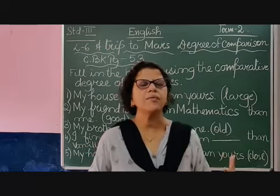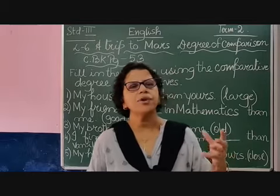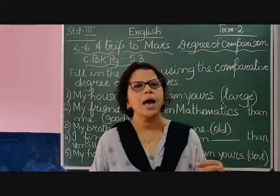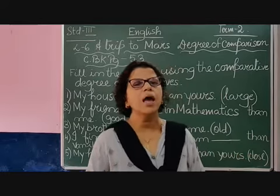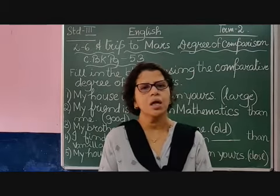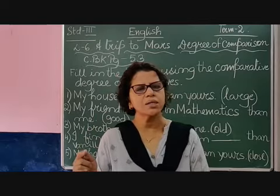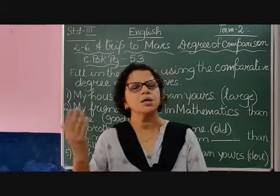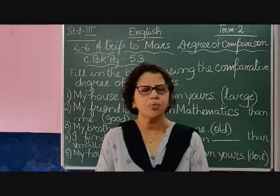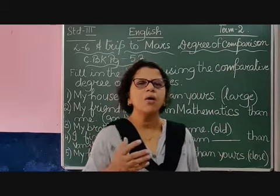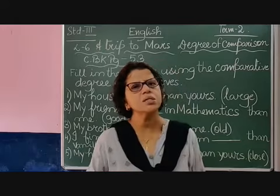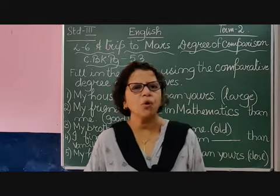So, when we form the comparative degree of adjective, we add ER. If it ends in Y, we put IER. If the adjective is a short word and the last letter is preceded by a vowel, there is a tendency to double the consonant — like 'big' becomes 'bigger' (B-I-G-G-E-R) and 'hot' becomes 'hotter' (H-O-T-T-E-R) — T is the last letter and before T we have a vowel, so it doubles. But this applies only to short words not broken into many syllables. For words with many syllables, we add 'more.' And some words form their own irregular comparatives. Children, please go through the list and learn those degrees of comparison.